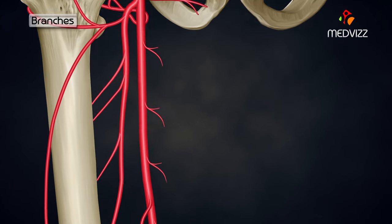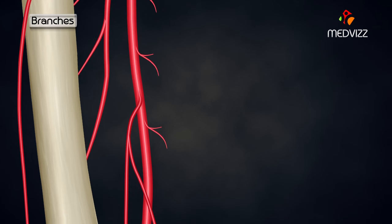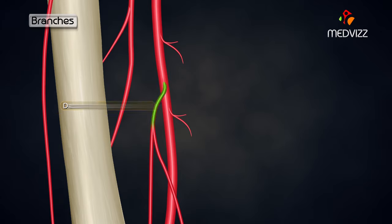In the adductor canal, the femoral artery gives off muscular branches and the descending genicular artery.